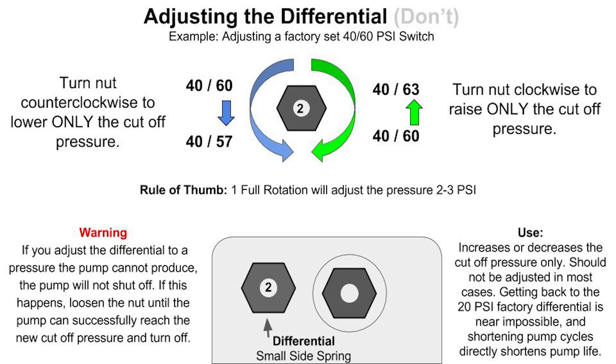Again, the differential only adjusts the off pressure or the high side of the pressure switch. You can turn the nut counterclockwise to lower the cut off pressure.